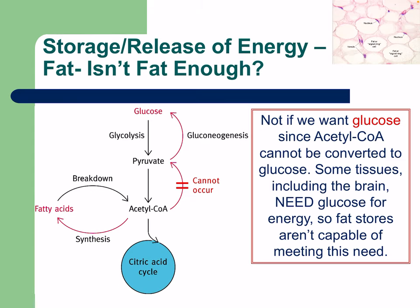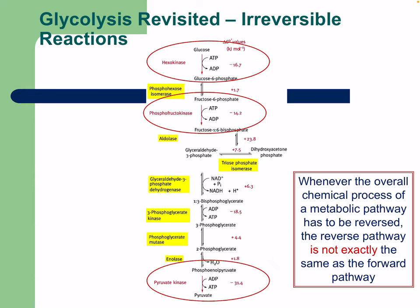Fat isn't enough either, because acetyl-CoA cannot be converted back to glucose, and some tissues including the brain need glucose for energy. Fat stores alone can't meet this need. Running on fats alone means we wouldn't have glucose for the brain. Glycolysis involves many irreversible reactions, so when the metabolic pathway must be reversed, the reverse pathway is not exactly the same as the forward pathway.